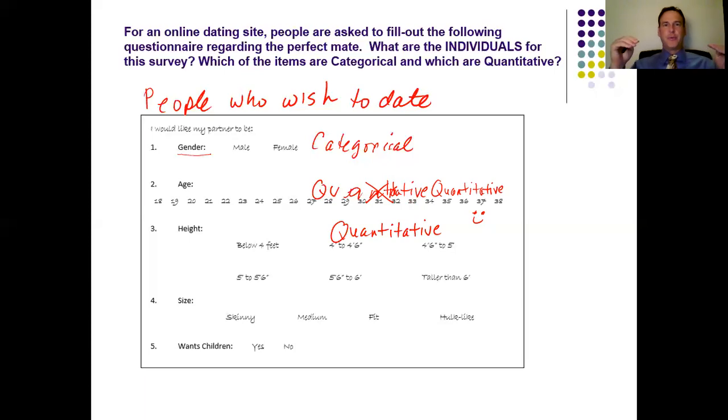Better. Size. Question number four is size and you can see we have skinny, we have medium, we have fit, we have hulk-like. To be honest, when I was a single guy, I always wanted the hulk-like dates, because I knew if I was ever at an ASU football game and I smarted off, I could always have my lady date protect me. So, nevertheless, if I looked at these, are they categorical or quantitative? It is definitely categorical.